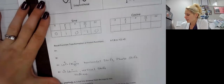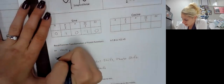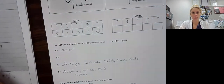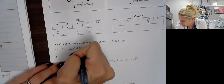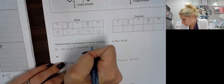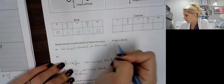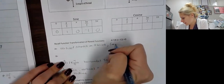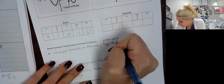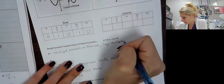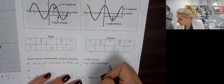Let's go to A. A does our vertical stretch or shrink. And also remember, if it's negative, it reflects it — it flips it. What this stretch or shrink does is it changes the amplitude. Amplitude is the distance from the midline to the max height or the min height. It stretches it or it shrinks it.